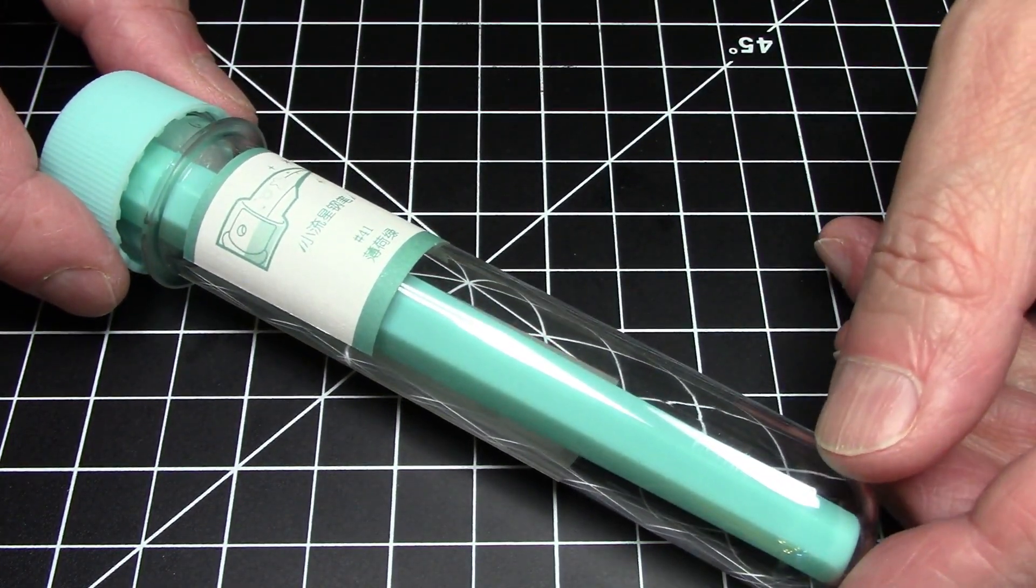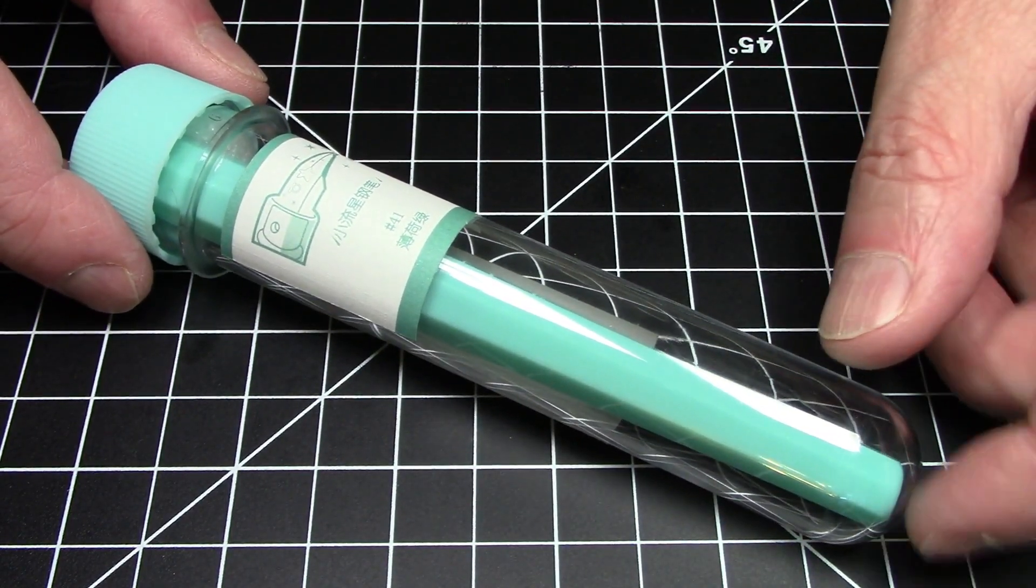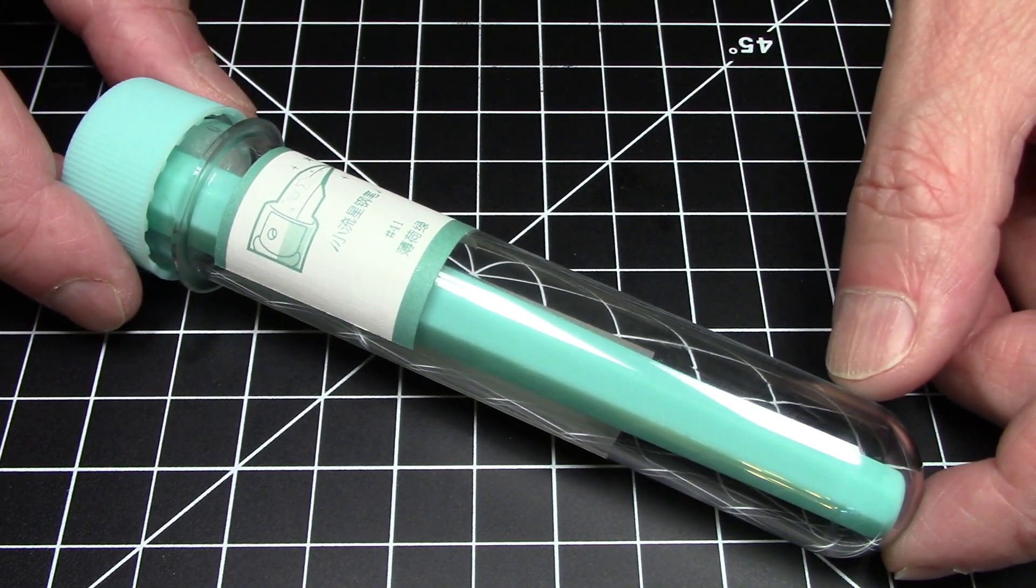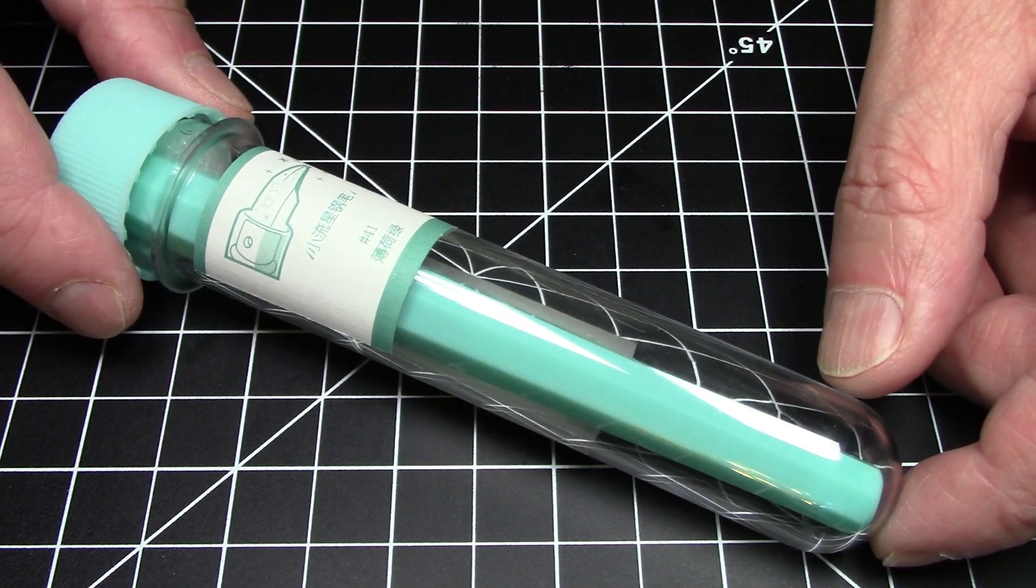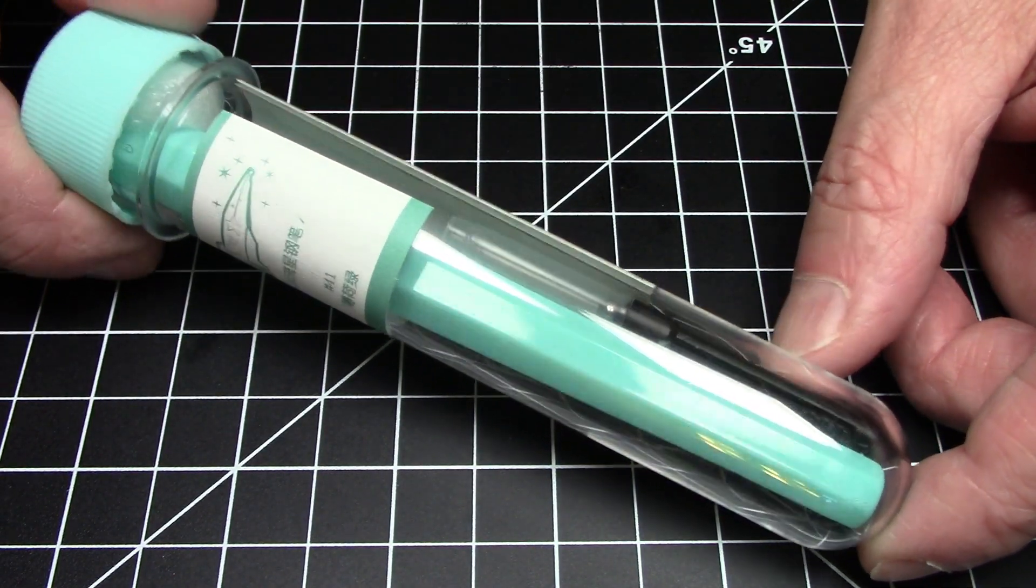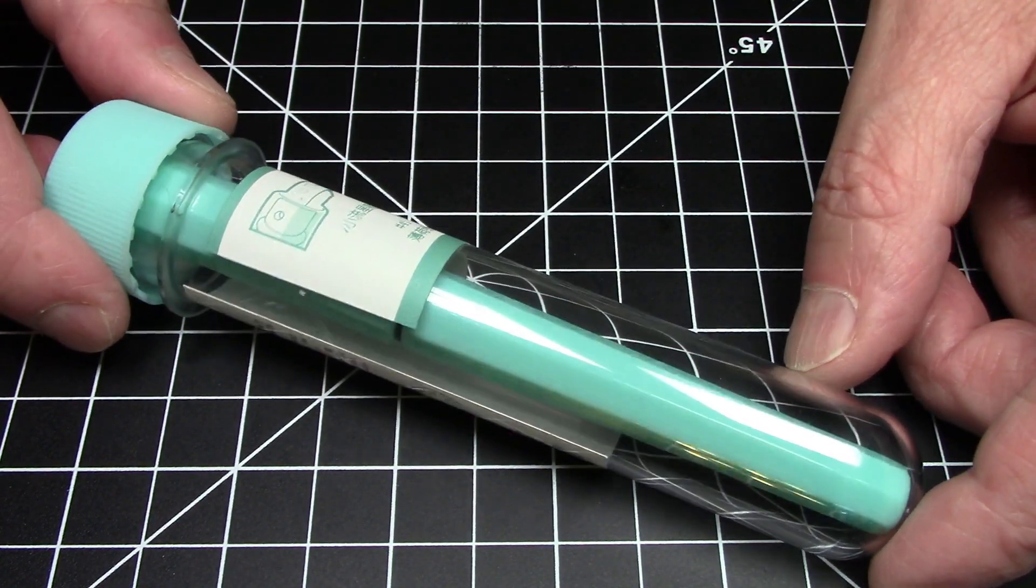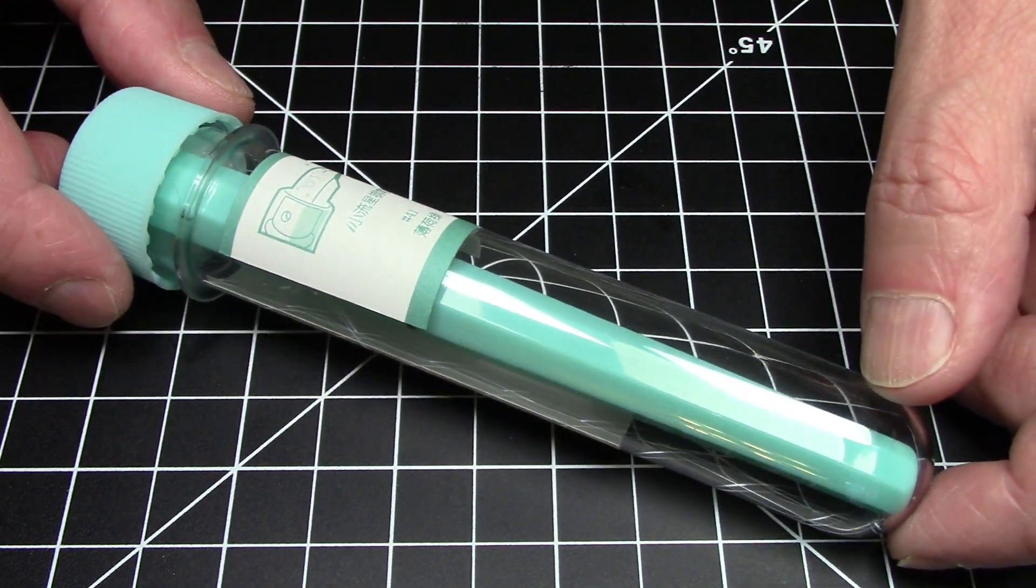This pen is from Platinum. It is called the Little Shooting Star or it is called the Small Meteor, which depending on how the vendor you're buying it from translates the name of the pen into English. So this is an inexpensive pen. I only paid about ten dollars each for these pens including shipping from Asia.